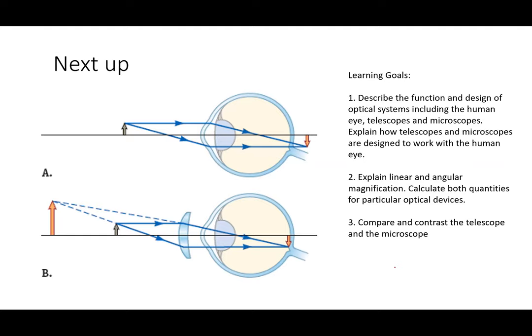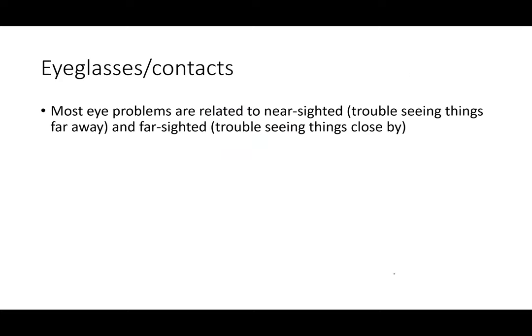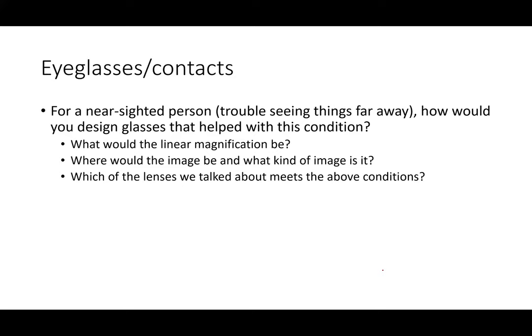Now let's talk about eyeglasses. Most eye problems correspond to being nearsighted or farsighted. Nearsighted people have trouble seeing things far away; farsighted people have trouble seeing things close by. These correspond to challenges with the eye's lens muscles — either not deforming the lens enough to shorten the focal length, or not relaxing enough to restore it to its resting shape.